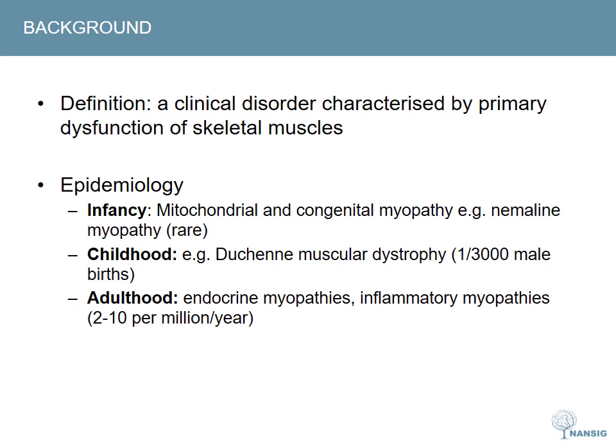Congenital, but also mitochondrial myopathies, may present in the infant. Typically, congenital myopathies have a known genetic basis, and are defined largely by the pathological findings within muscle, for example, nemaline rods. These are very rare overall, but are the most common myopathies in this age group.